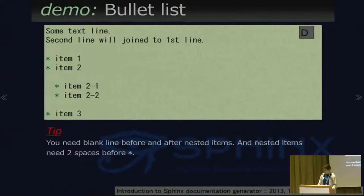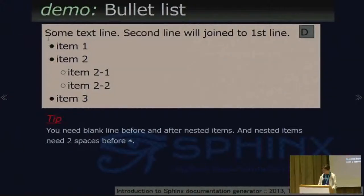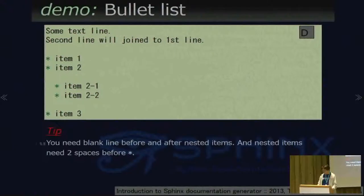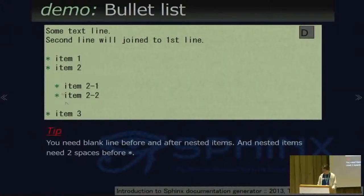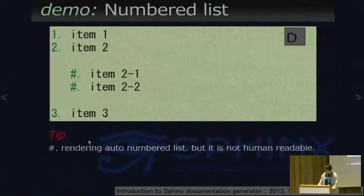First, bullet lists. This is a simple bullet list — this reStructuredText renders as this HTML output. The tip is: you need a blank line before and after nested items, and the nested item needs two spaces before the asterisk.